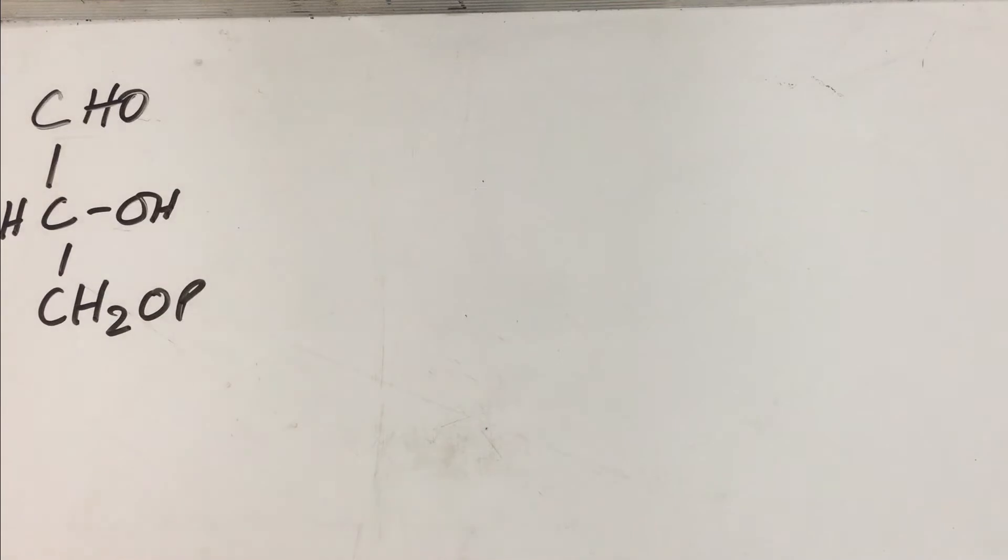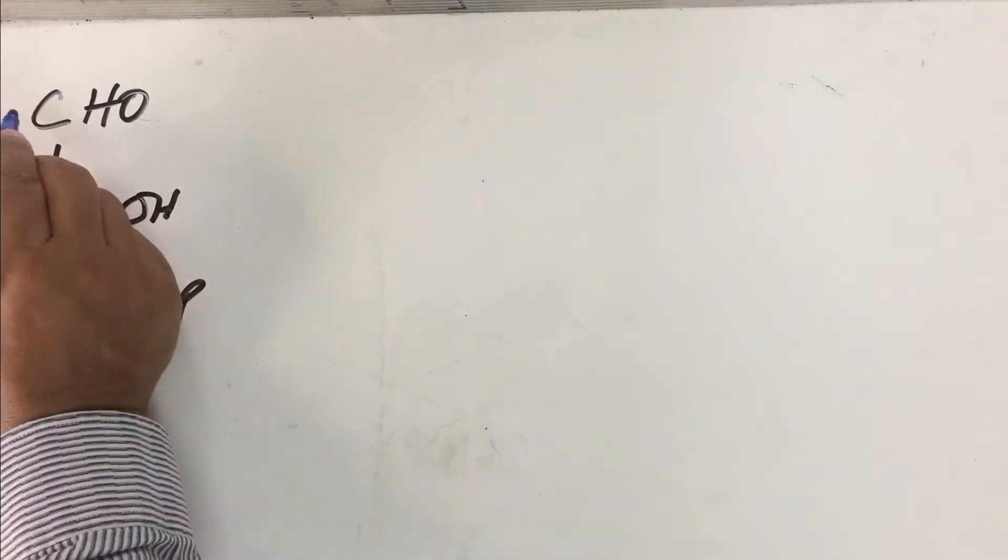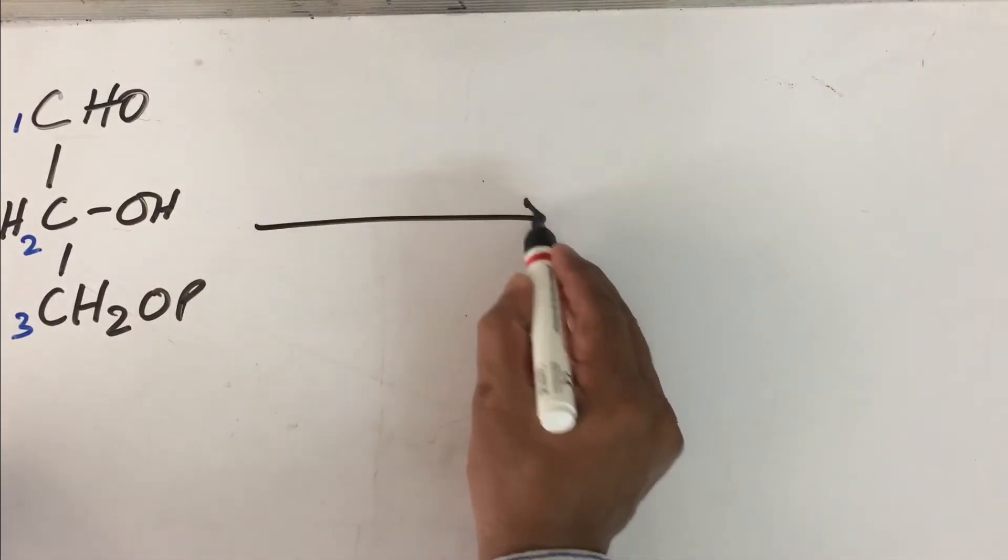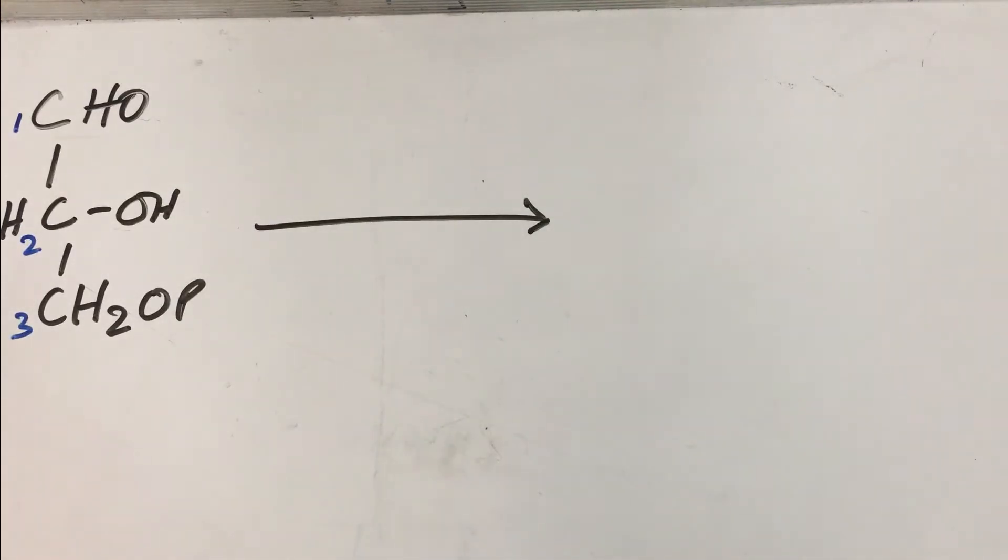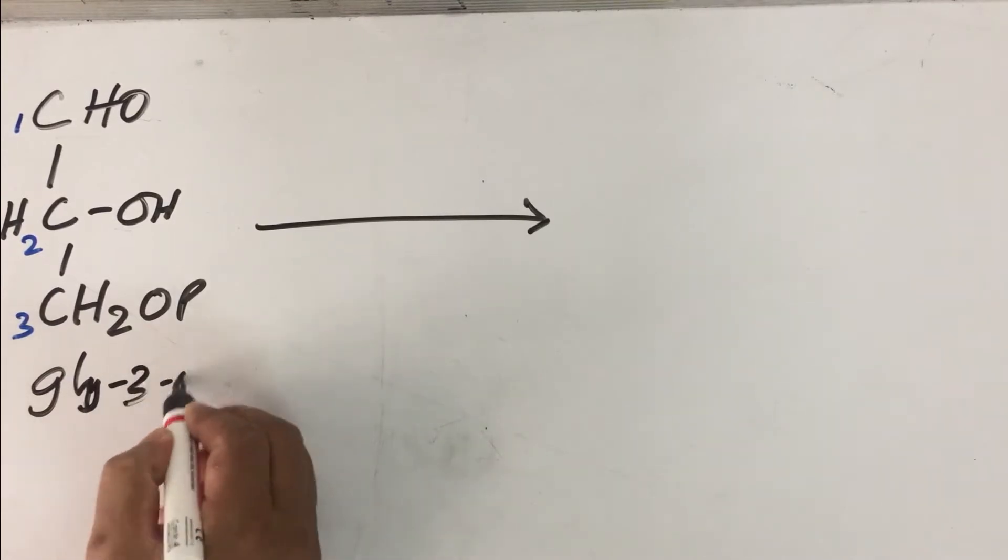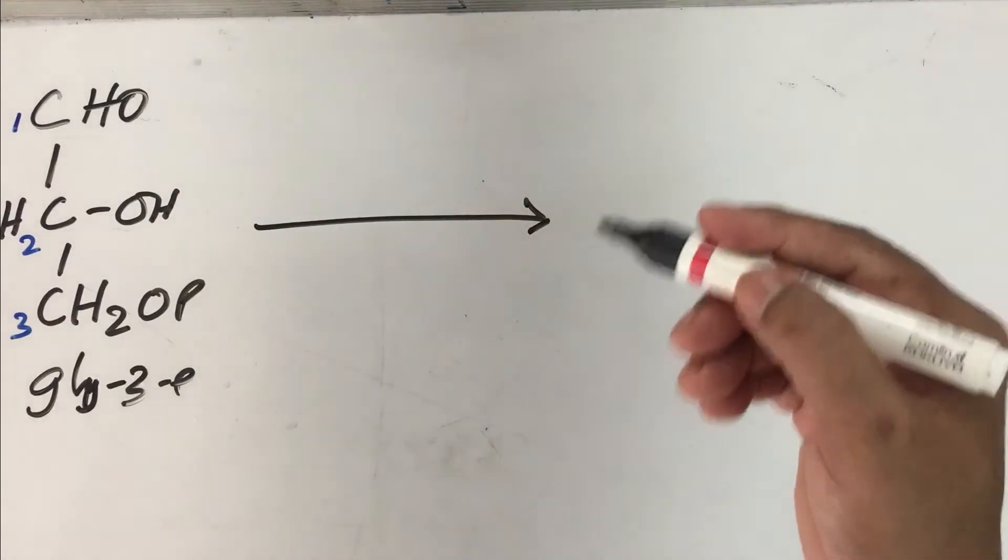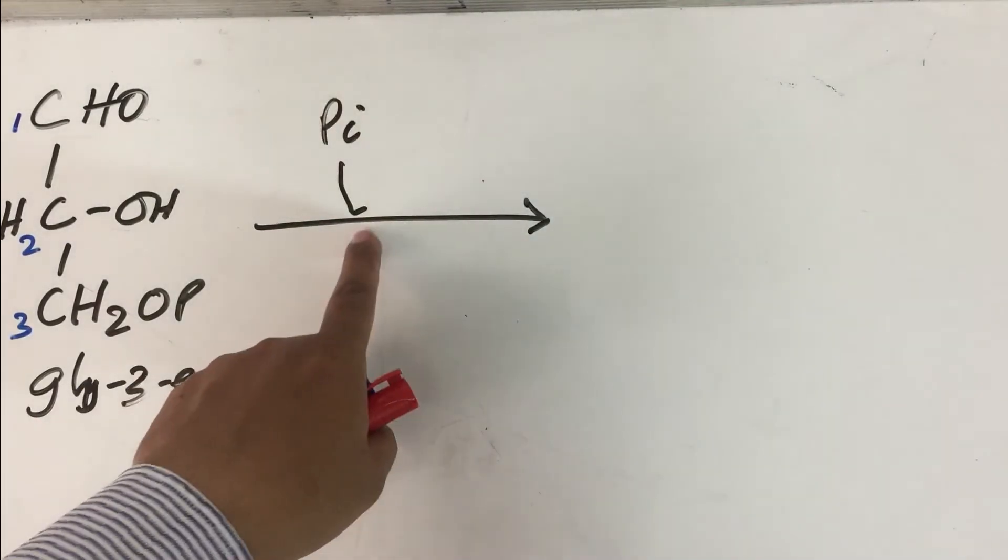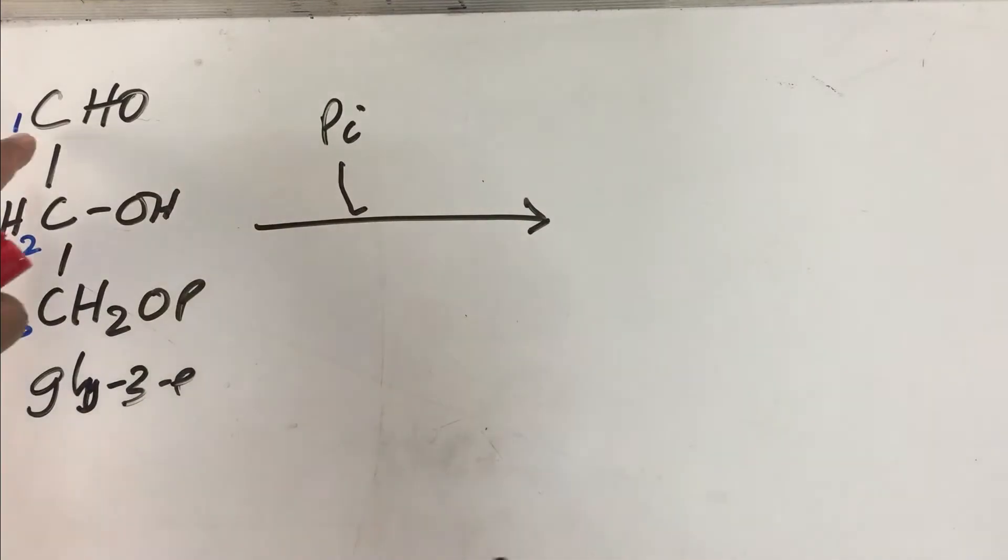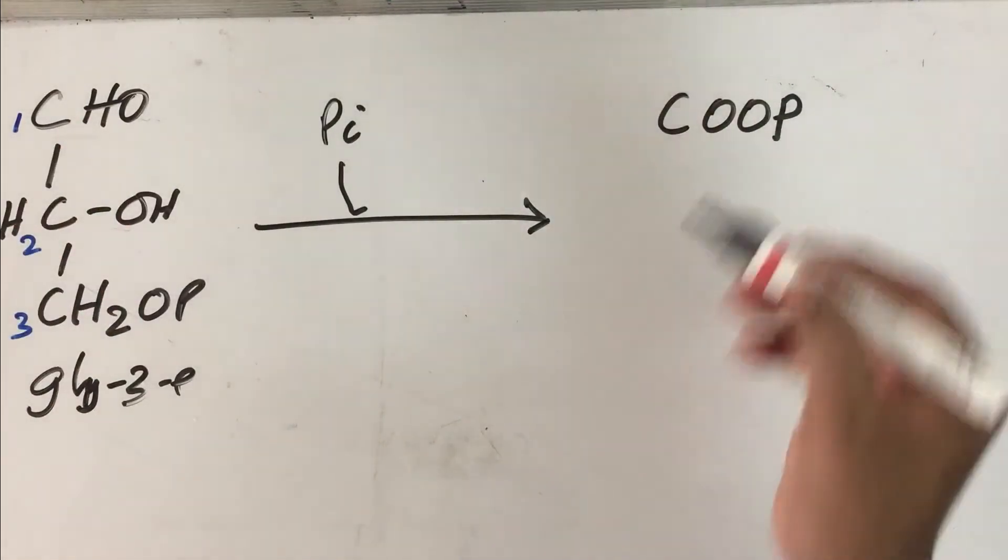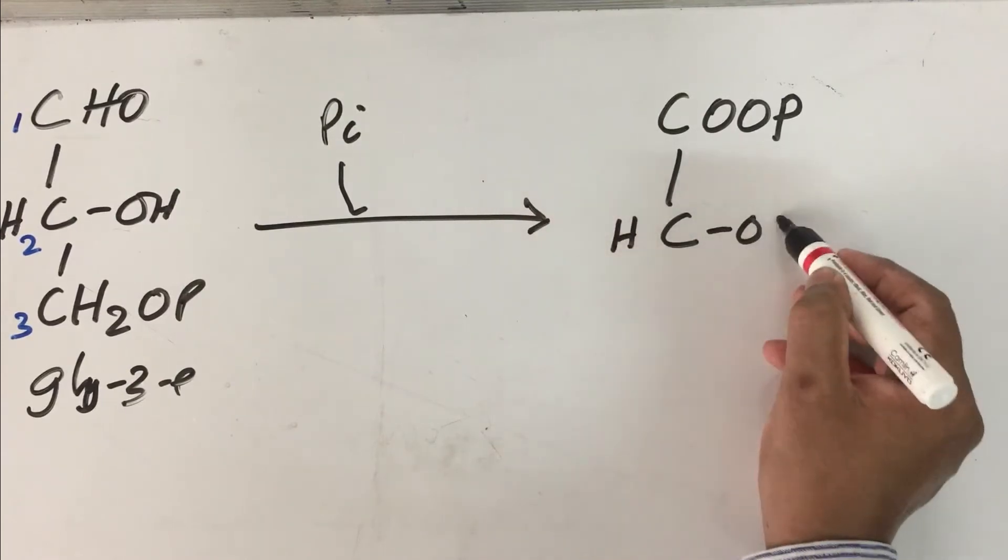What happens in reaction number six? I have already written the structure of glyceraldehyde 3-phosphate. Let us number the carbon atoms: this is number one, this is number two, this is number three. Glyceraldehyde 3-phosphate will undergo an oxidation reduction reaction and convert into a high energy compound, 1,3-bisphosphoglycerate. An inorganic phosphate gets added to carbon number one, converting the aldehyde group to a carboxylic acid, an acyl phosphate. The remaining is CH2OP.